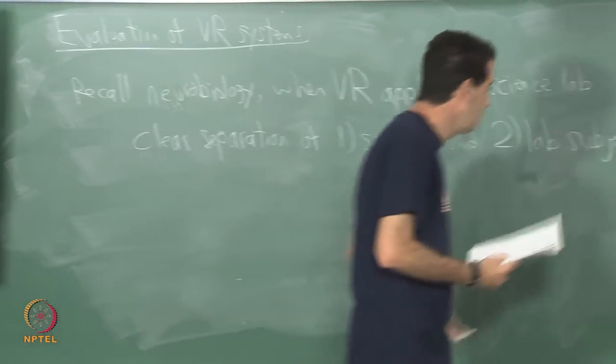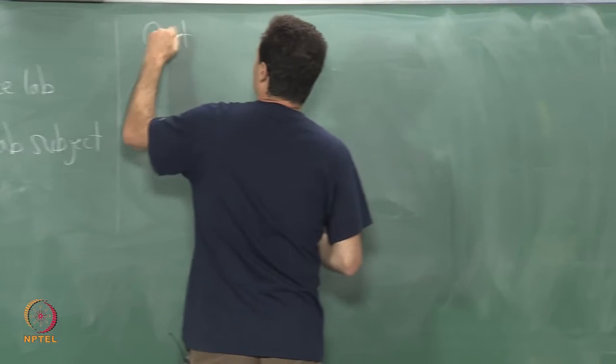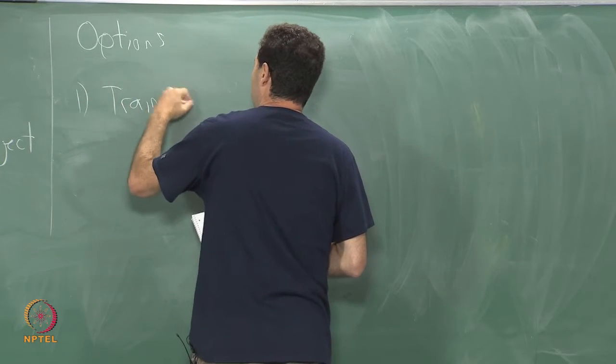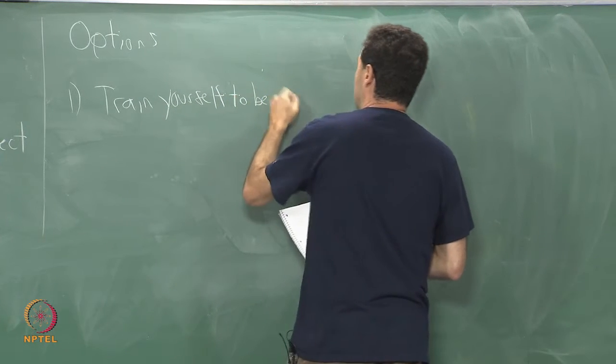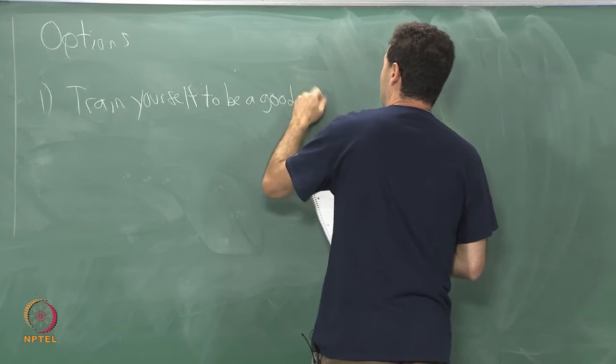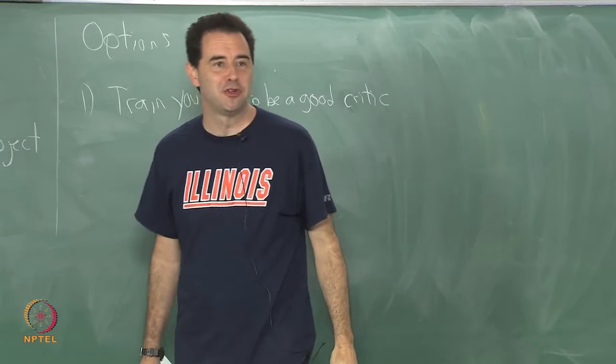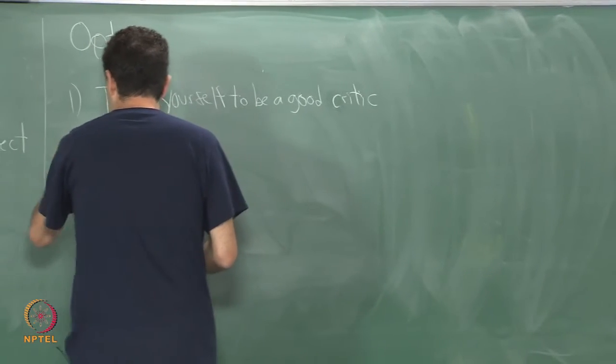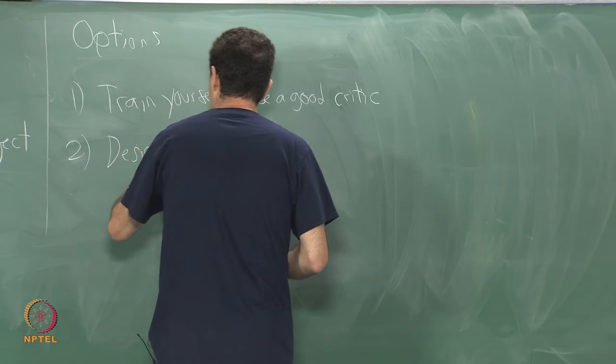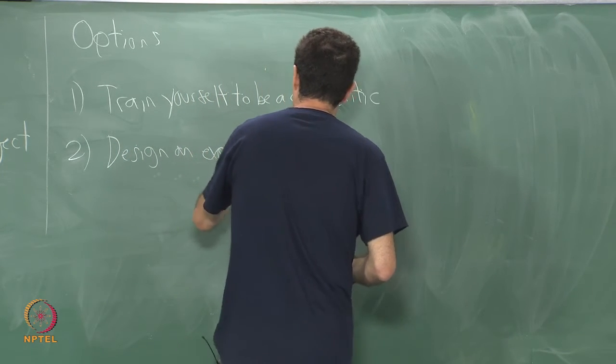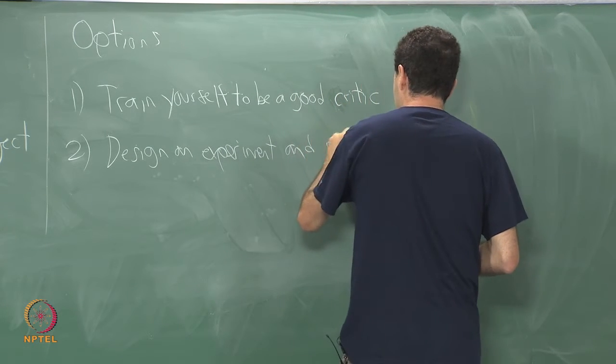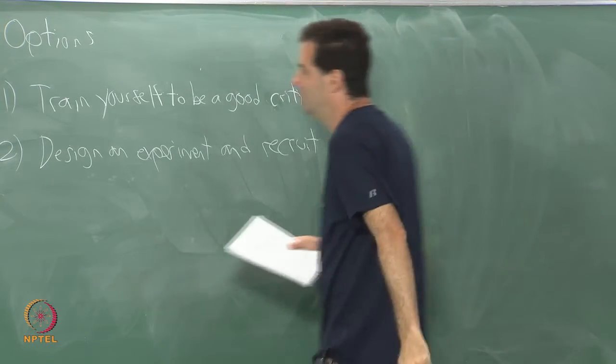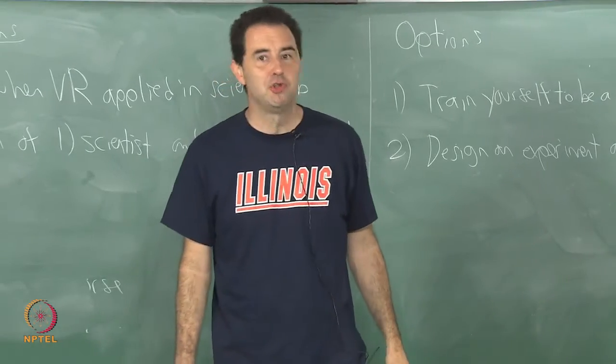What options do you have? I'll mention two options. One, train yourself to be a critic, maybe a bad critic in the sense of training yourself to be very negative and hostile towards your own designs. Or two, design an experiment and recruit test subjects. I suggest choosing both of them.